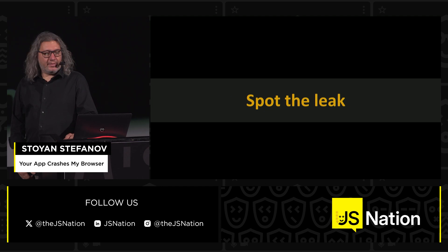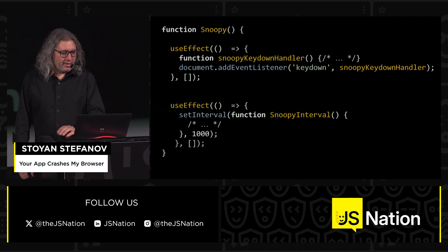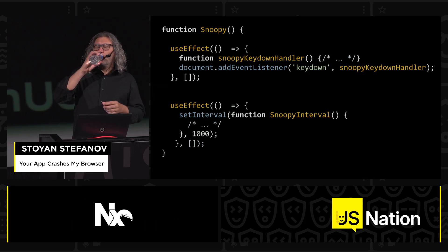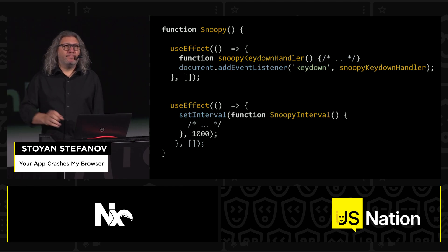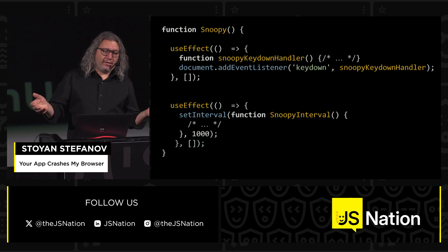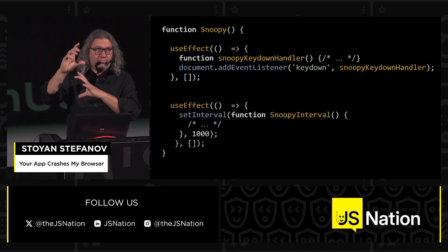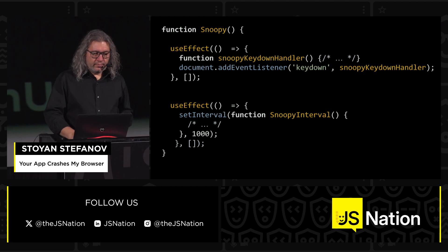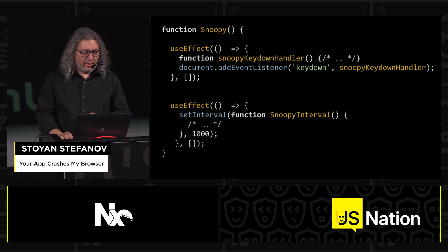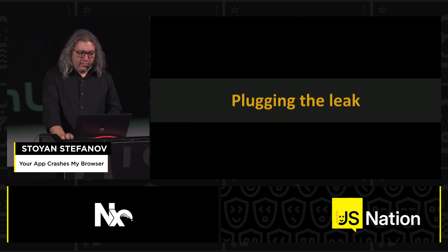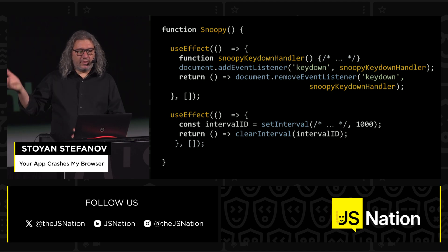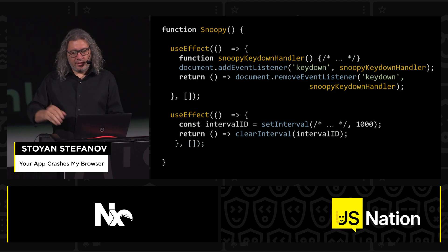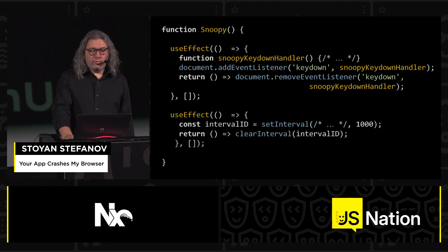One more time with hooks, so people aren't disgusted by class-based components. Now we have useEffect. We do two things: one is the keydown event listener, one is the interval — they could be in the same useEffect, but personally I prefer one for each chunk of work. The leak is again that when the component is removed, some stuff still hangs around. How do we plug it? useEffect allows you to return a function — that's the cleanup. Return a function that cleans up after yourself. Different API — class-based versus function components — but still the same idea.